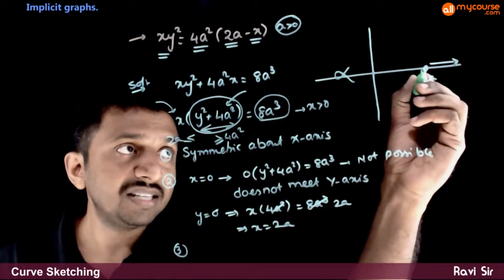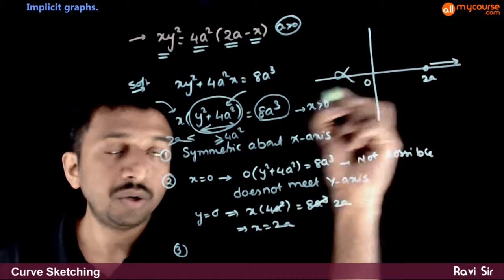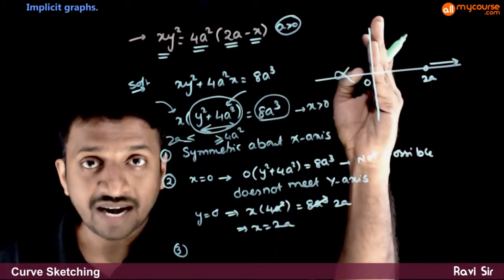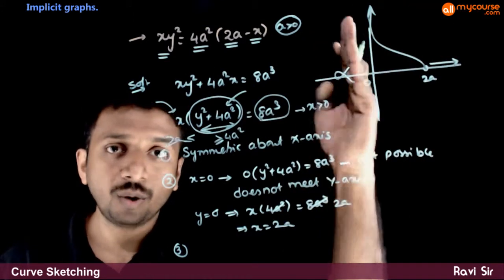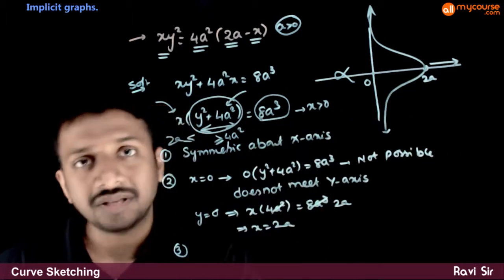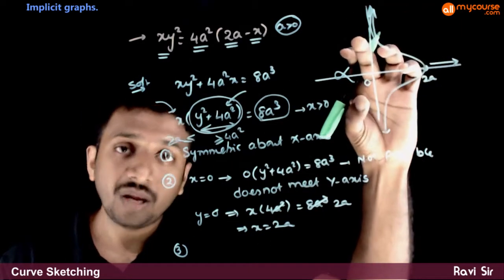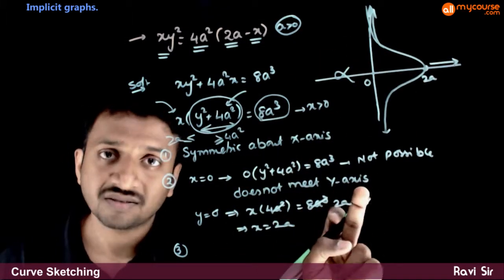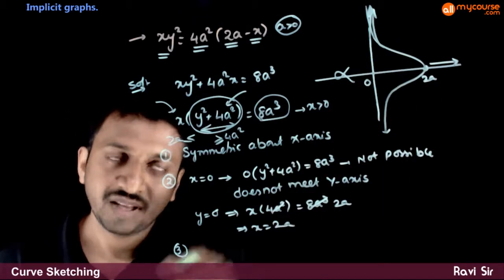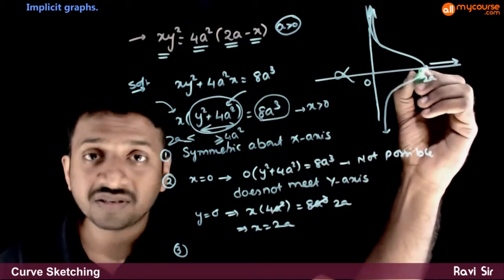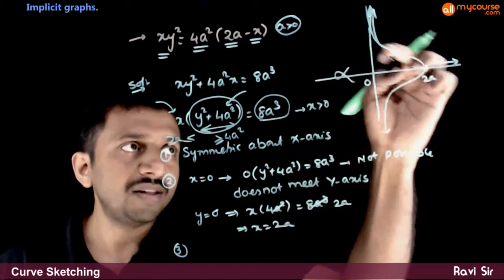As x decreases toward 0, y increases toward infinity — the product is constant. So the graph lies entirely between x = 0 and x = 2a. It asymptotically approaches the y-axis as x → 0, and since the graph is symmetric about the x-axis, it does the same on the lower side. The approximate graph looks like a curve opening around x = 2a and stretching to the y-axis asymptotically. The exact shape may vary slightly, but this approximate graph is sufficient.